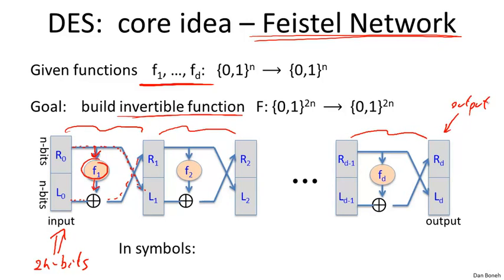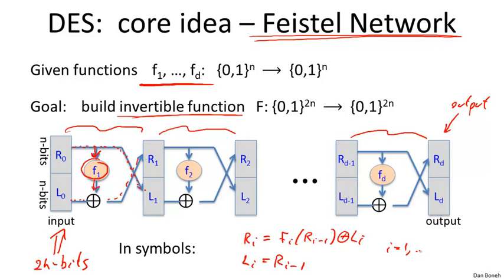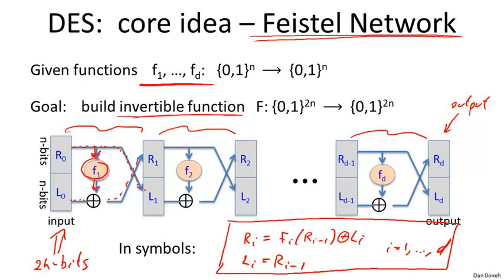We can write this in symbols: Li equals R_{i-1}, and Ri equals F_i applied to R_{i-1}, XOR L_i. This holds for i going from 1 to d. This is the equation that defines a Feistel network, mapping a 2n-bit input to a 2n-bit output.